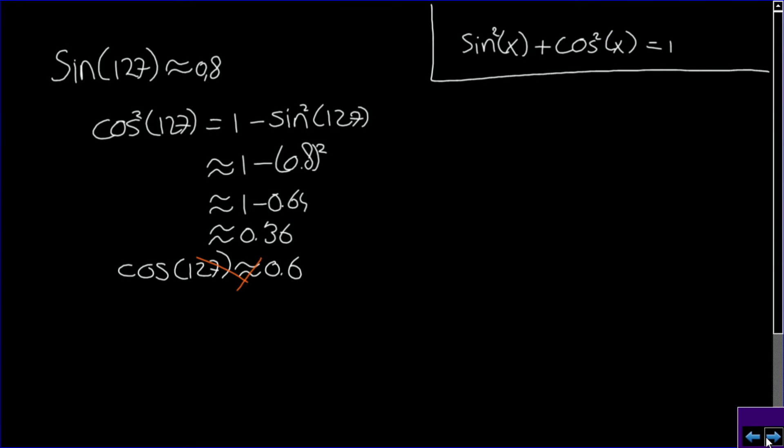Let's go back to the calculation. I derived the value of cosine of 127 squared using cosine of x squared plus sine of x squared equals 1 and this is fine, but then I conclude that cosine of 127 must be the square root of 0.36.